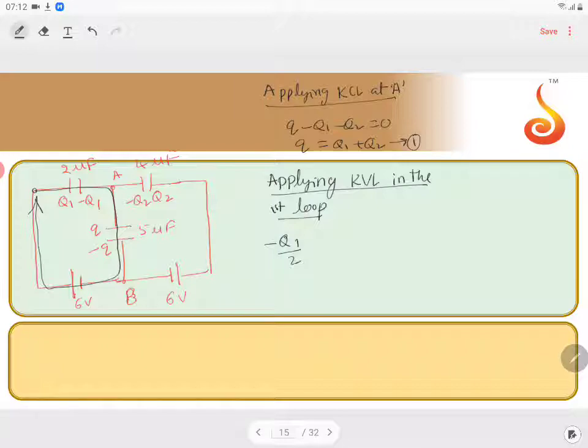So Q1 by 2, minus Q1 by 2, minus Q1 plus Q2 divided by 5, plus 6 equals 0. This is equation number 2.